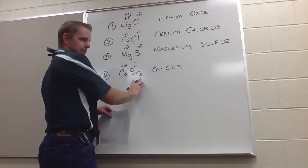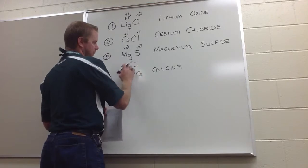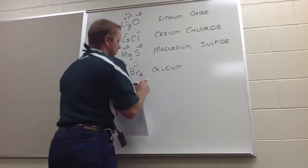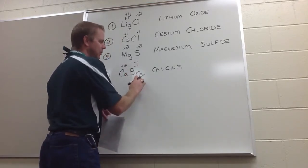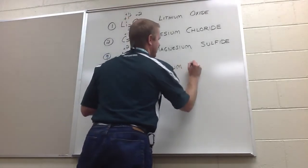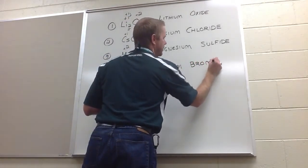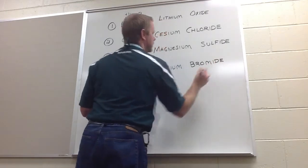It doesn't matter if there's two of them. The only thing, the reason there's two of them is to make that charge thing cancel. This is ionic. Eventually, we'll get to covalent. This is calcium bromide.